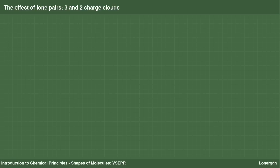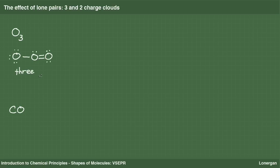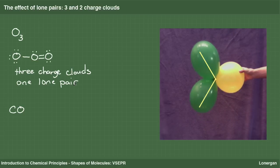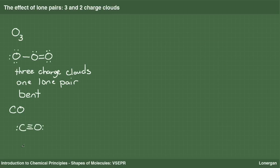How do lone pairs affect the molecular geometry when there are only three or two charge clouds? Examples are ozone (O3) and carbon monoxide (CO). The Lewis structure of ozone shows that the central oxygen has two connections to atoms and one lone pair — three charge clouds total, one of which is a lone pair. This is represented by two green balloons and one yellow balloon tied together. The lone pair bends the two green balloons out of an originally linear configuration, giving a bent molecular geometry. For carbon monoxide, there are only two charge clouds around the carbon, and only one is a bond — the other is a lone pair. As there are only two atoms involved, the geometry is by definition linear, since two points make a line.